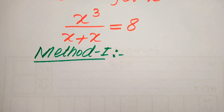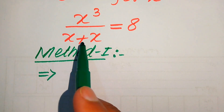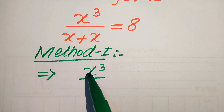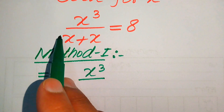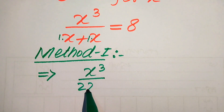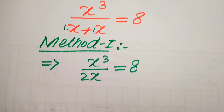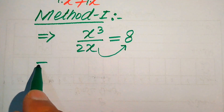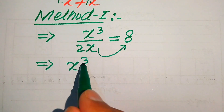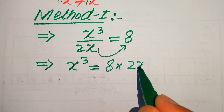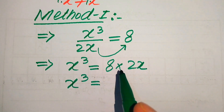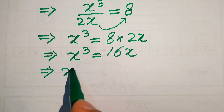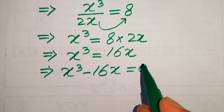In the first method, the very first thing we do is sum up the two like terms. When we add two like variable terms, we add their coefficients. The coefficients of both terms are 1, so 1 plus 1 gives us 2x equals 8. We then move 2x to the right-hand side, where it multiplies 8, giving us x cubed equals 16x.